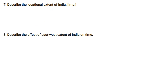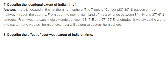Describe the local extent of India. India is located in the northern hemisphere. The Tropic of Cancer at about 23.5 degrees north passes almost halfway through the country. From south to north, mainland India extends from 8 degrees 4 minutes north to 37 degrees 6 minutes north latitude. From west to east, India extends between 68 degrees 7 minutes east and 97 degrees 25 minutes east longitude, placing India in the eastern hemisphere.